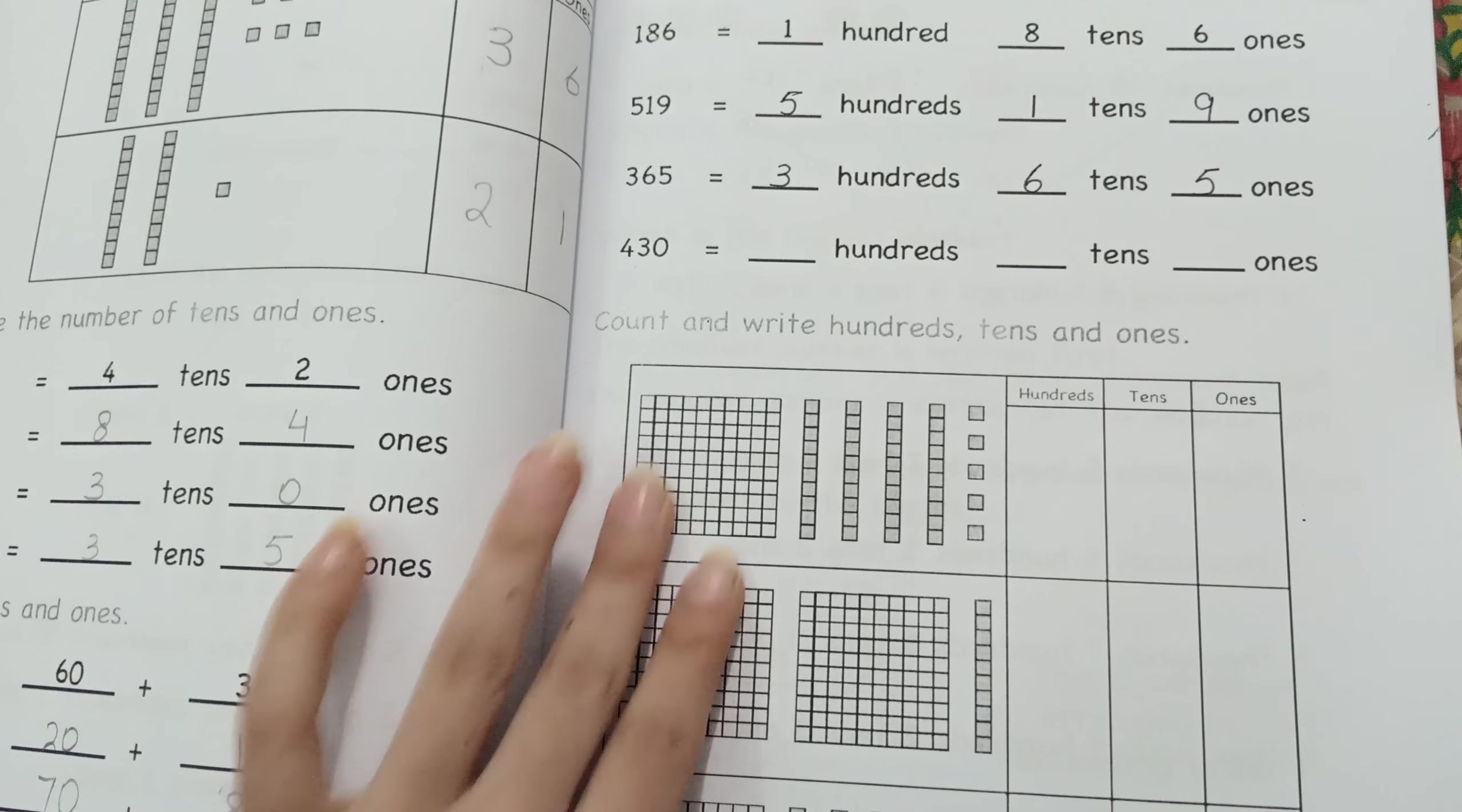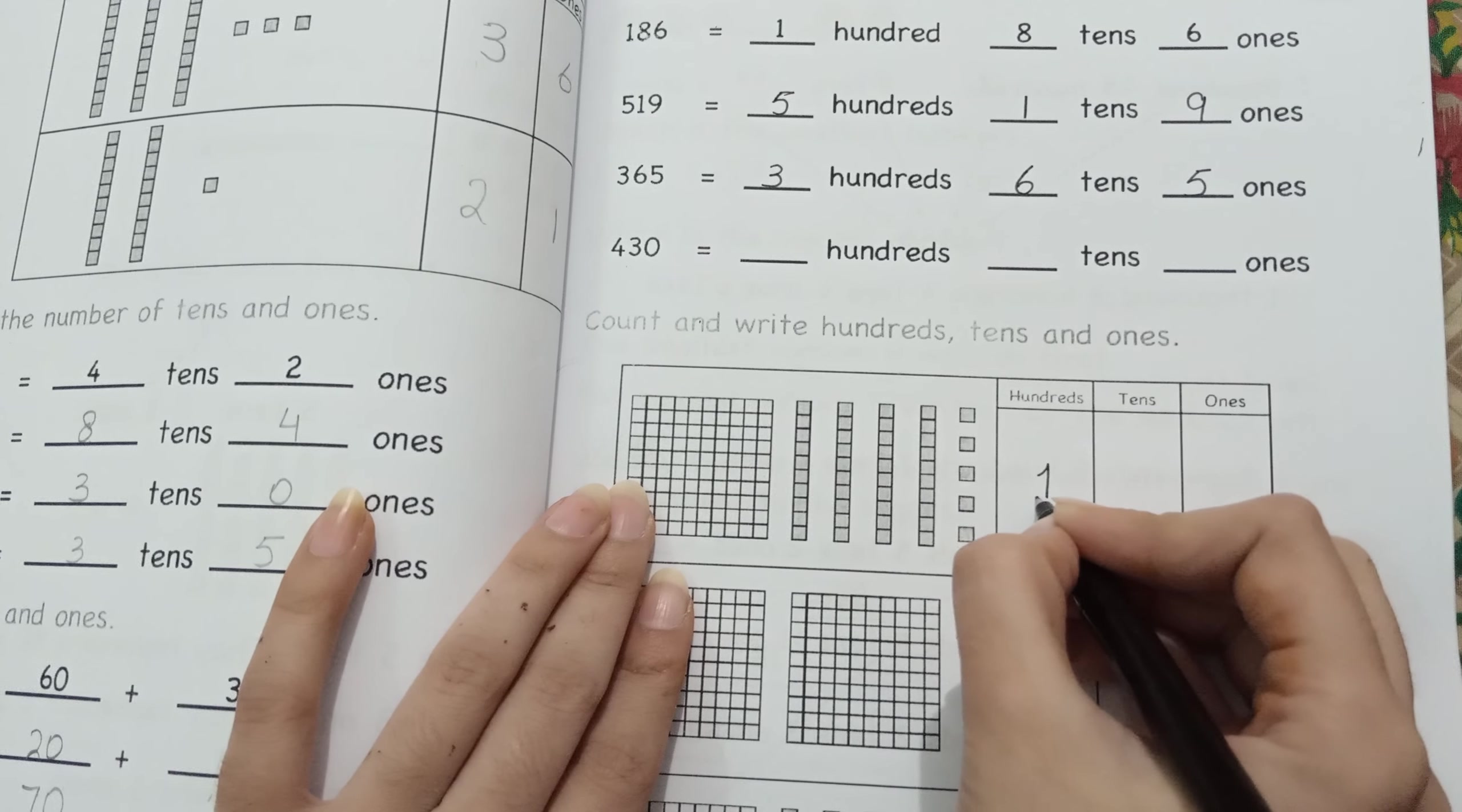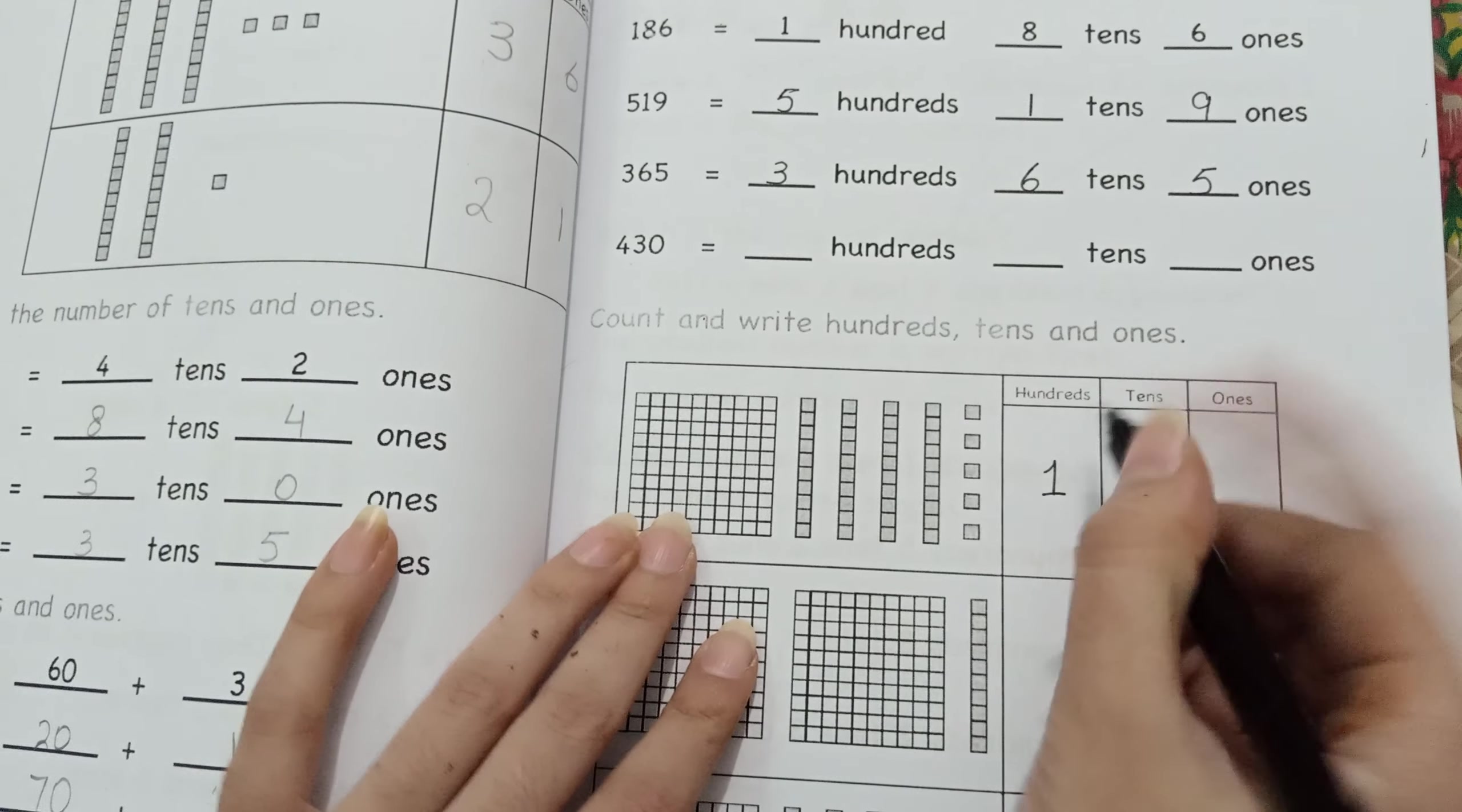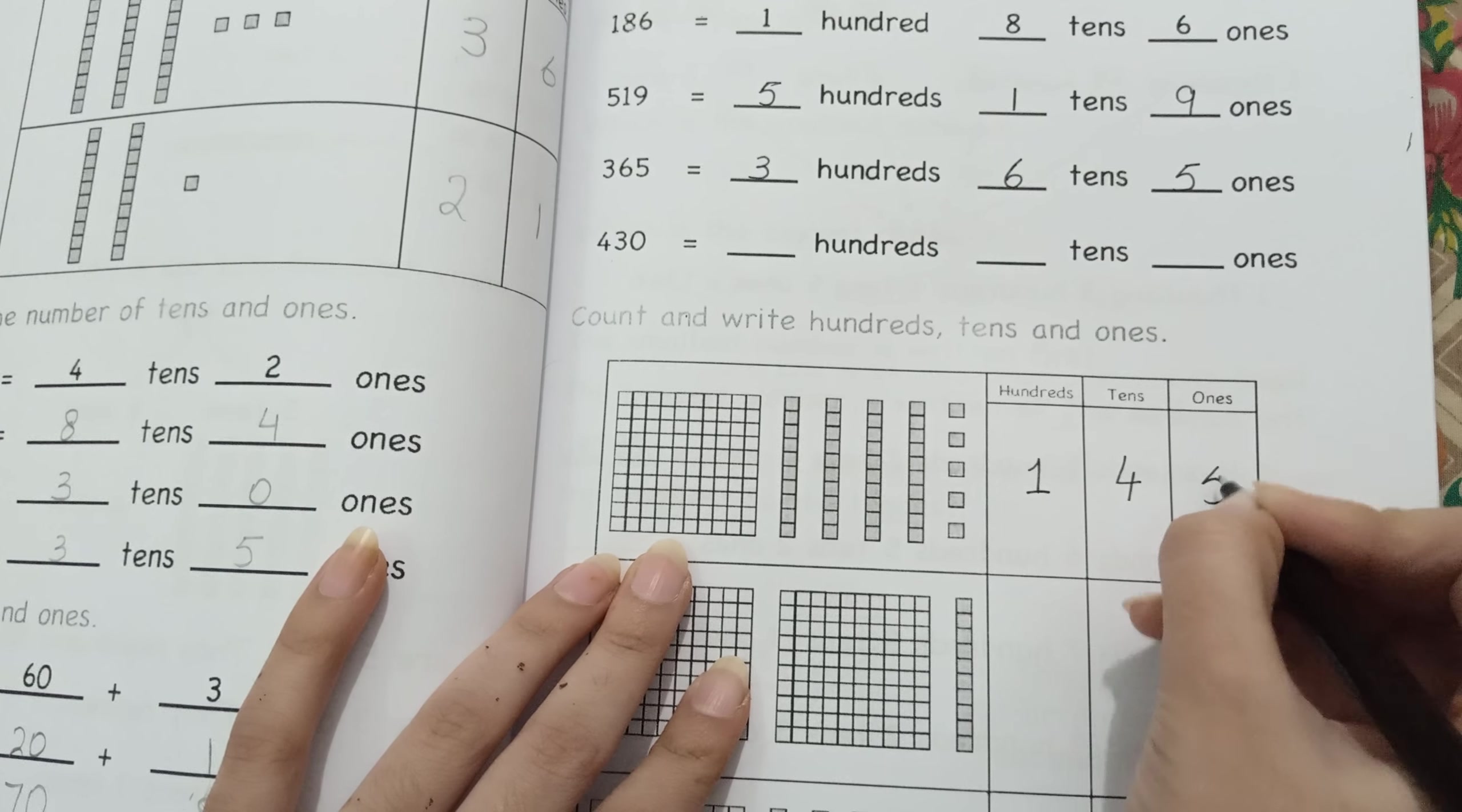Here you have hundreds, tens and ones. This will show you. Here is 1 hundred block, you will write 1. Let's see how many tens: 1, 2, 3, 4. We will write 4 in tens. Let's see how many ones: 1, 2, 3, 4, 5. What will come here? 5.